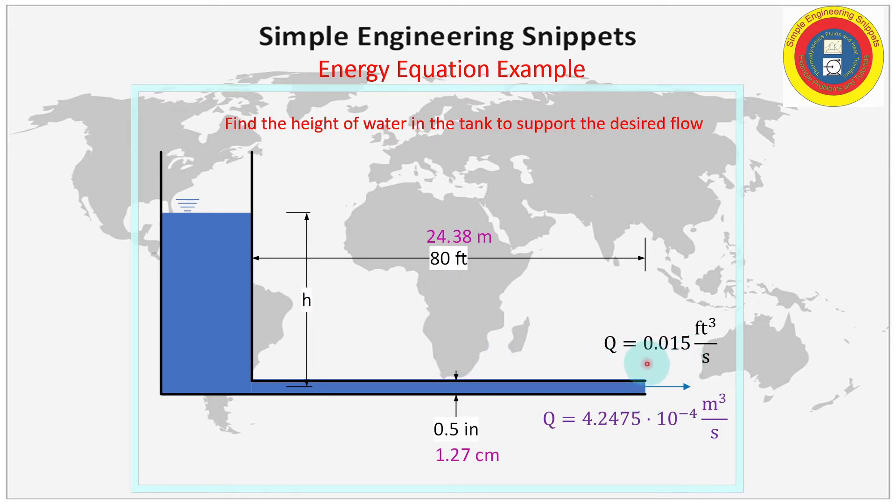So this example looks something like we've done before and on first thoughts we could say well we can use Bernoulli's equation for this. If we could use Bernoulli's equation it'd be a very simple problem because we know that the velocity, if we ignore losses, is equal to the square root of 2gh. So it's a simple matter of converting our volumetric flow rates into velocities and then back calculating for the required h.